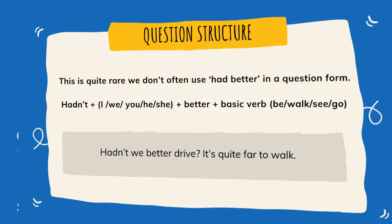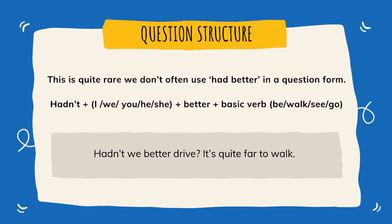And finally the question structure. This is quite rare — we don't often use 'had better' in a question form, but we sometimes use it. The structure for 'had better' in the question form is: hadn't + pronoun or name (I, he, she, etc.) + better + a basic verb. The question example is: 'Hadn't we better drive? It's quite far to walk.'